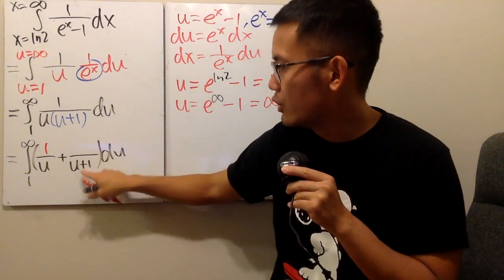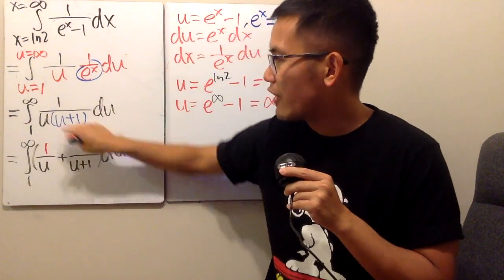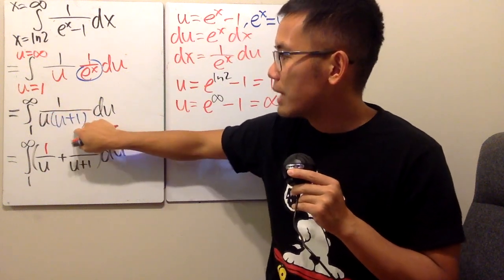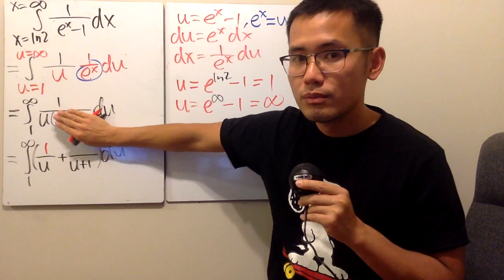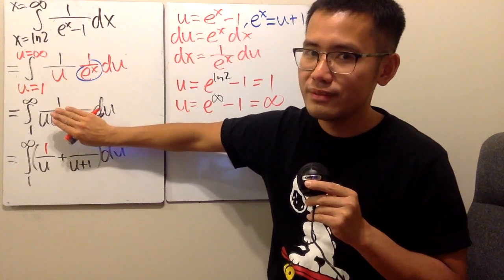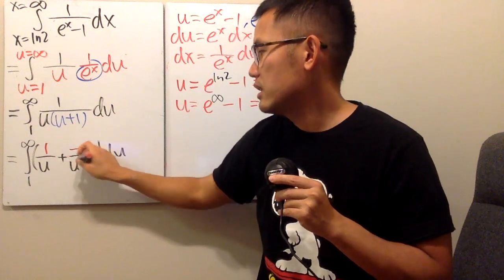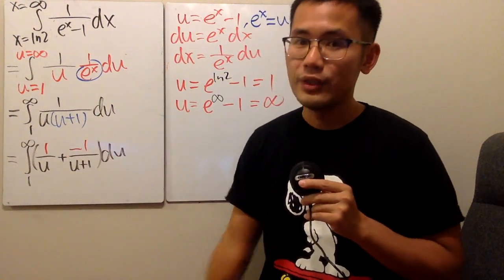Now, to figure out this number, you go back to the original, and you cover the same denominator. And you ask yourself, how can you make u plus one equal to zero? u has to be negative one. You put negative one right here and work that out. One over negative one, we get negative one, like that. Very nice, huh?